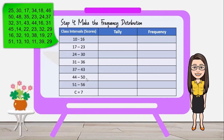In the last row, write the value of the class size, which is 7. Now let's make the tally. A tally is the record of occurrence of scores shown by a tally mark, and every fifth tally is drawn diagonally to make a gate of 5. Examine each score — for example, 25 belongs to the class interval 24 to 30, 30 also belongs to 24 to 30, and 17 belongs to 17 to 23.